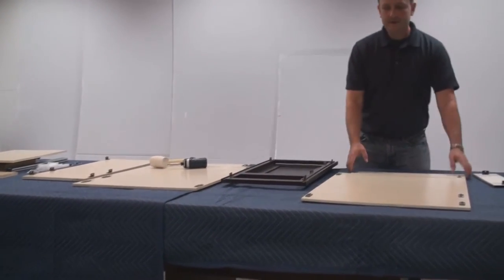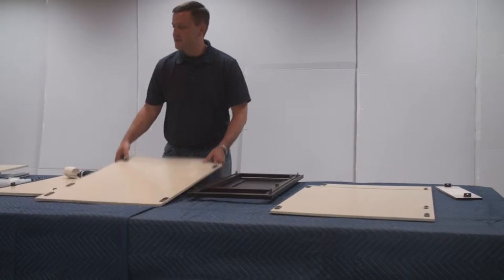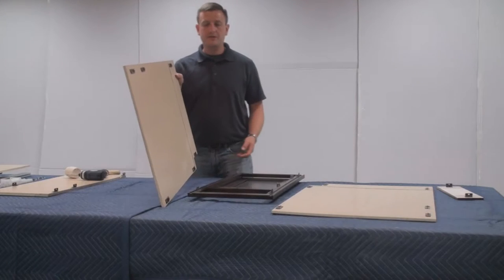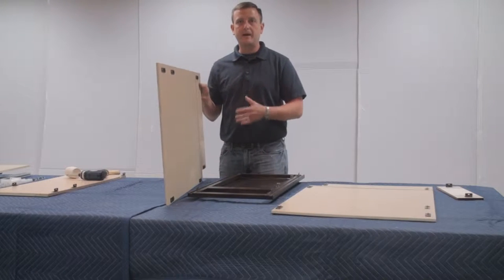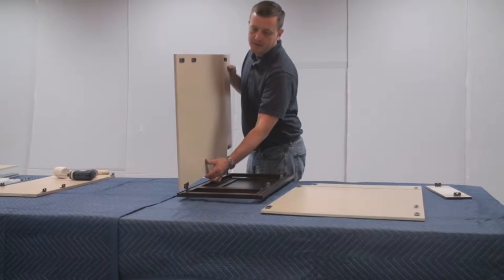The next step we're going to be doing is installing the sides onto the face frame. This one assembles a little bit different than the Appalachian Oak and a few other cabinets where you assemble the back and then put the faces on. With Shaker Espresso, we're going to start with the face and work our way to the back.